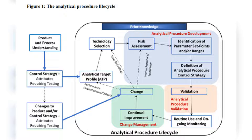The guideline's Figure 1 depicts the analytical procedure lifecycle, highlighting development, change management, and ICH Q2-covered validation. Elements vary by intended use and approach, with potential concurrent occurrences. The analytical target profile (ATP), influenced by the quality target product profile, is vital for procedure development, determining necessary attributes and performance criteria. ATP guides technology selection, procedure design, and continual improvement, ensuring long-term suitability. Annex A provides ATP examples.